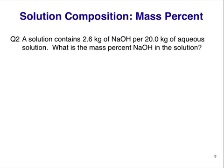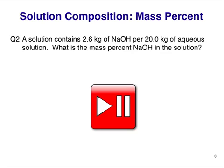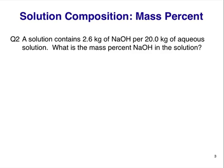Question 2. A solution contains 2.6 kilograms of sodium hydroxide per 20 kilograms of aqueous solution. What is the mass percent NaOH in the solution? Press pause now and work out your answer.